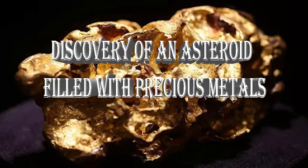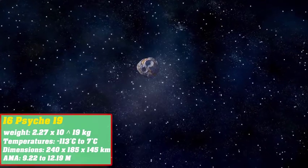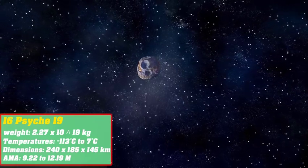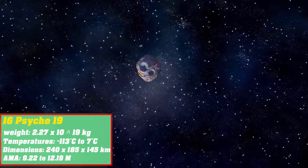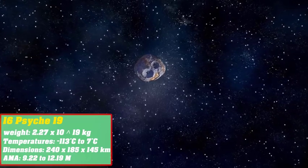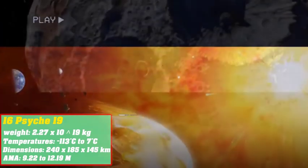Discovery of an asteroid filled with precious metals. On March 17, 1852 in Naples, scientist Annibale de Gasparis discovered an asteroid with a meridian more than 200 kilometers, composed entirely of rare metals. He named the asteroid 16 Psyche.